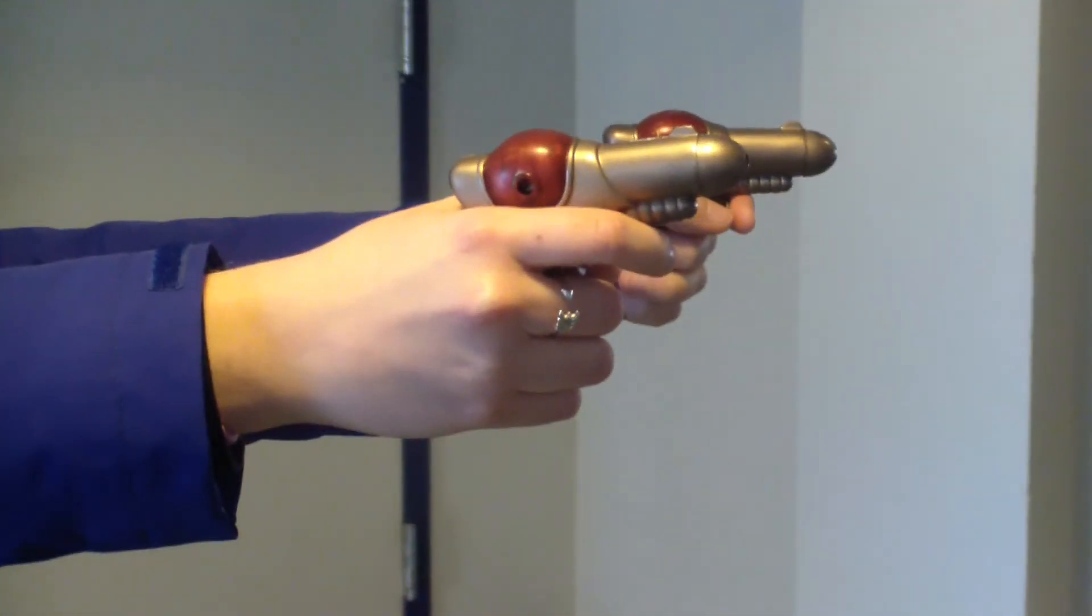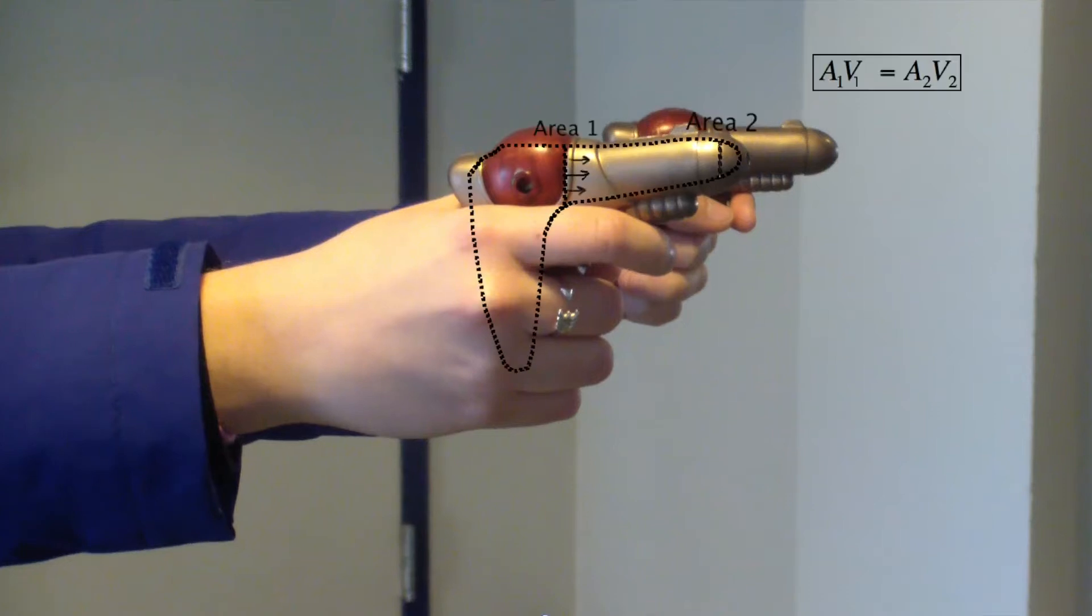The trigger of this gun is connected to a plunger, which pushes fluid through a nozzle. Applying the continuity equation, we note that A1 V1 is equal to A2 V2. The plunger area is A1, which is a much larger area than the nozzle area, A2.